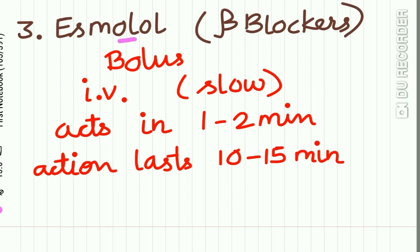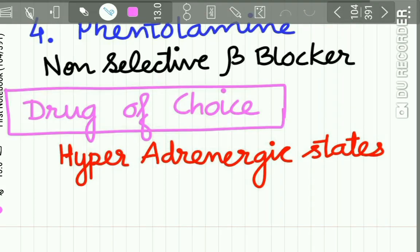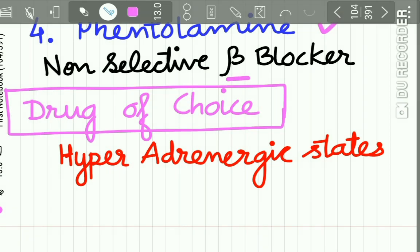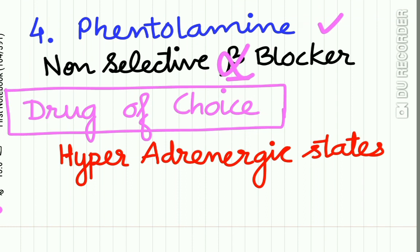Thirdly, esmolol is a potent beta blocker given as a bolus followed by slow IV injection. It acts in 1 to 2 minutes and the action lasts for 10 to 15 minutes. Finally, phentolamine is a non-selective alpha blocker and is the drug of choice for hyperadrenergic states — for example, when hypertensive episodes occur in pheochromocytoma or clonidine withdrawal.